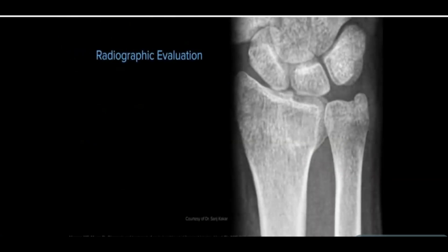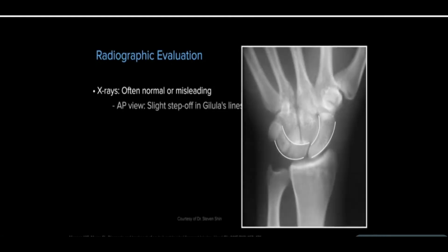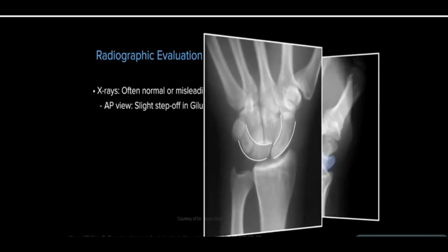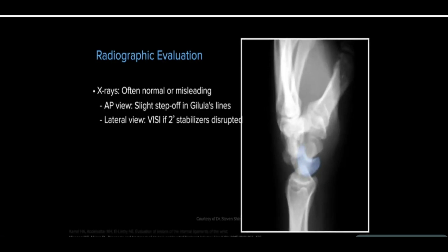In most lunotriquetral injuries, plain x-rays are within normal limits or misleading. Occasionally, there is a slight step-off or break in Gilula's lines along the proximal carpal row on the AP view. When secondary joint stabilizers are also disrupted, VISI can be seen on the lateral view.